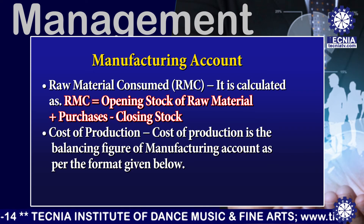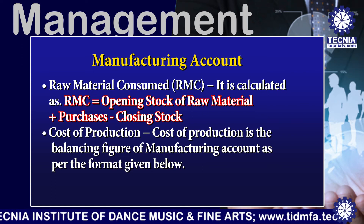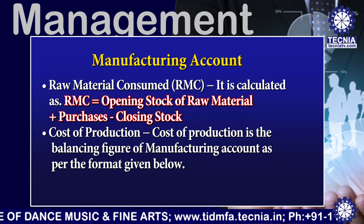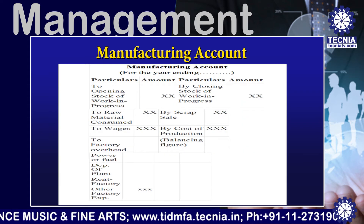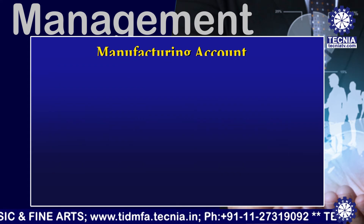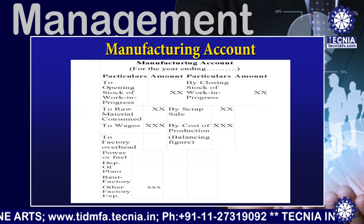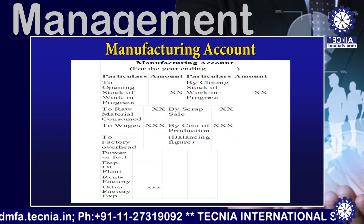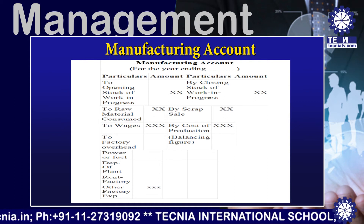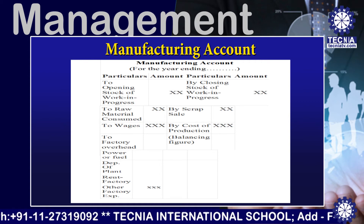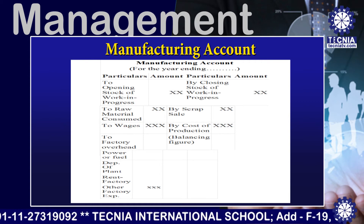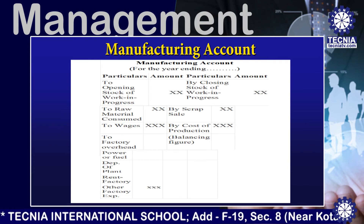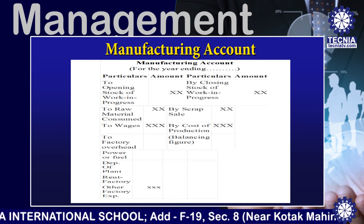Then the cost of production. Cost of production is the balancing figure of the manufacturing account as per the format given below. Look at the format of the manufacturing account for a particular period. Let me explain the debit side or left side of the manufacturing account. On the left side you need to record the opening stock of work in progress, then the raw material consumed, then direct expenses like wages and all other factory overheads — that is power, fuel,